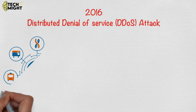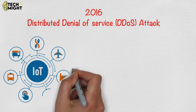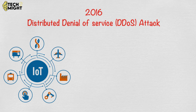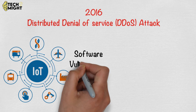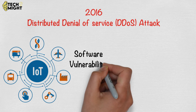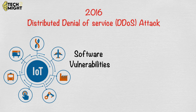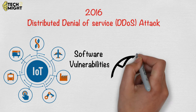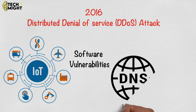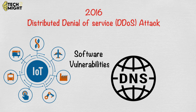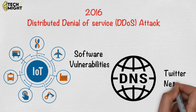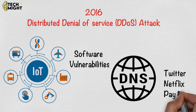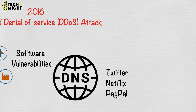In 2016, the largest-ever distributed denial of service attack took place, which used over 1 million connected devices in the Internet of Things that were compromised by the attackers due to software vulnerabilities. The attack caused outages in the global domain name system and popular services including Twitter, Netflix, and PayPal.